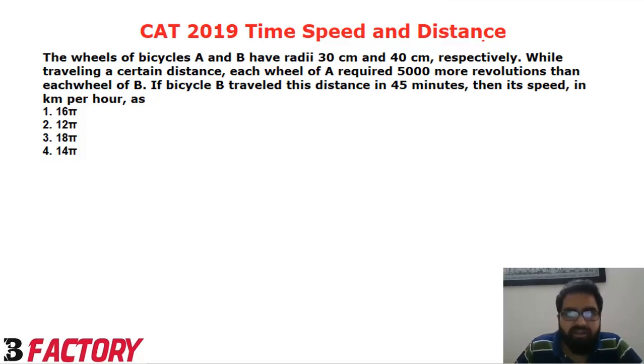We are given that the radii of A and B are in the ratio 3 to 4. So A to B, these are radii R_A and R_B.